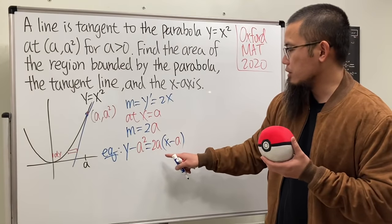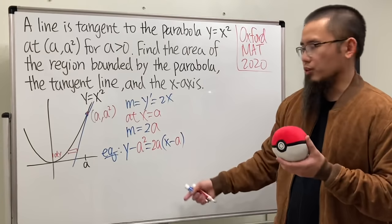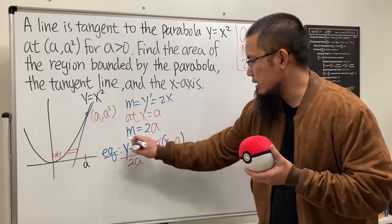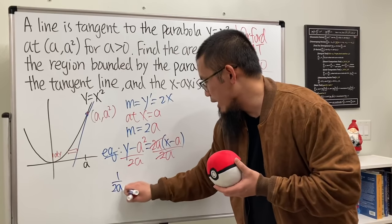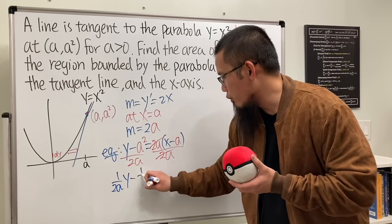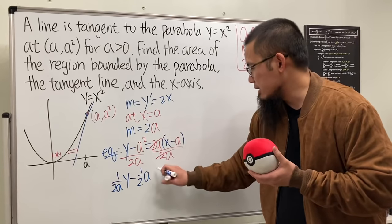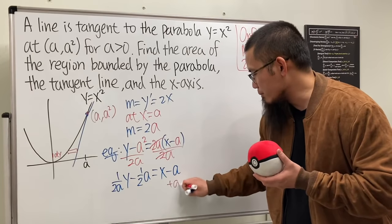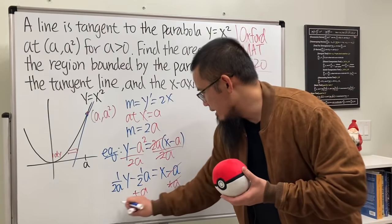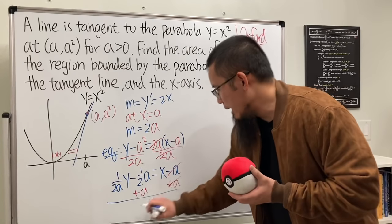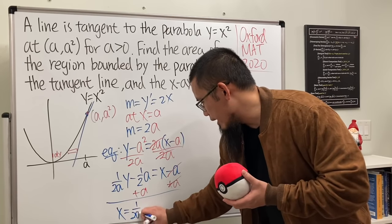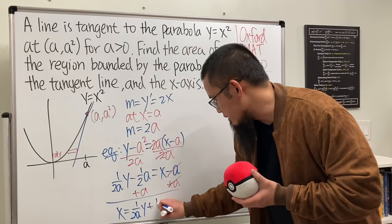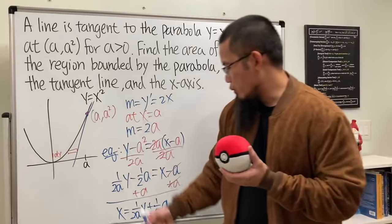We want to isolate x, so divide both sides by 2a: (1/2a)y minus 1/2 · a equals x minus a. Adding a to both sides gives x equals (1/2a)y plus (1/2)a. Be really careful — it's positive one-half a. So we now have the tangent line expressed as x in terms of y.